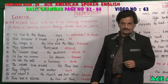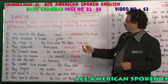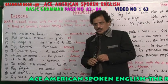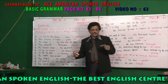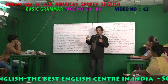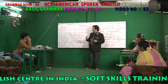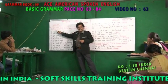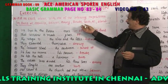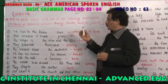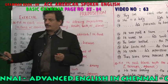Welcome to ACE American English Center. Check your grammar book, page number 83 to 84. We have come to video number 63 — prepositional phrases. A preposition connects a noun to another part of speech. Common prepositions include: in front of, opposite, between, among, besides, with, of, and about.